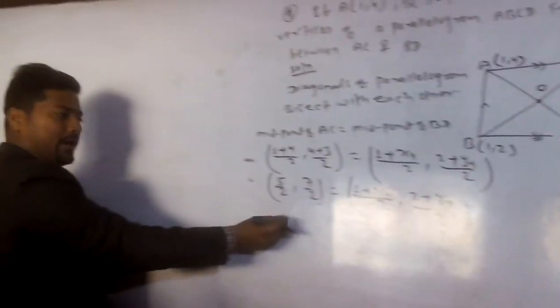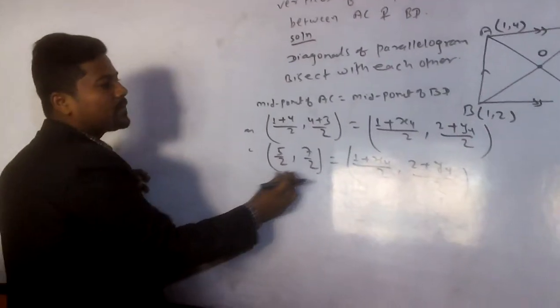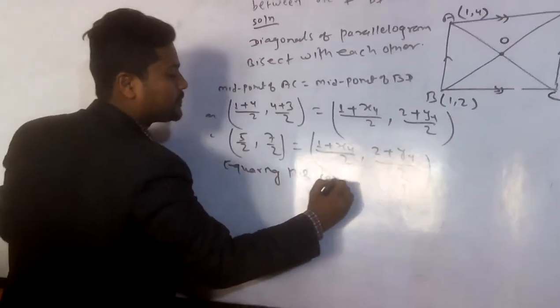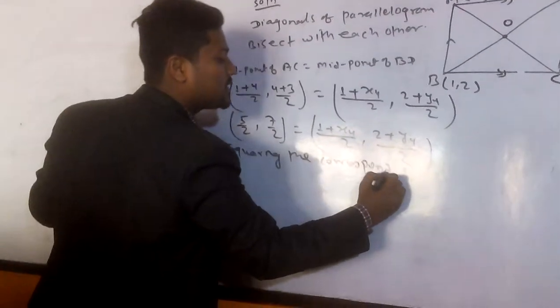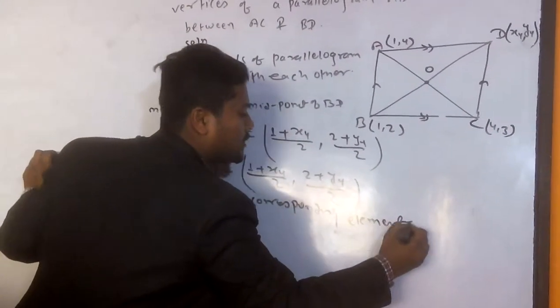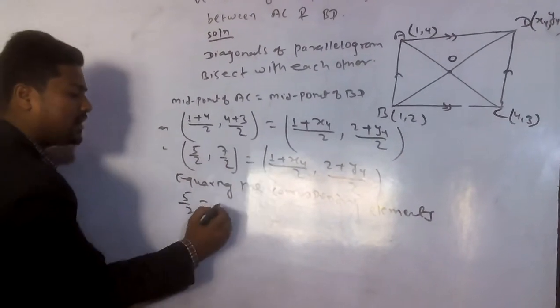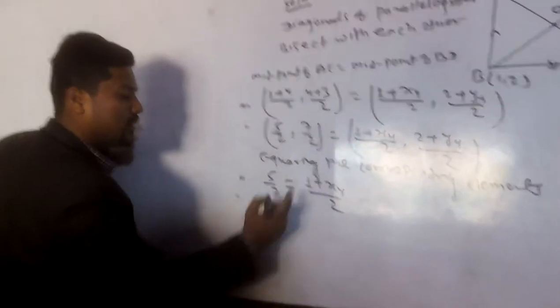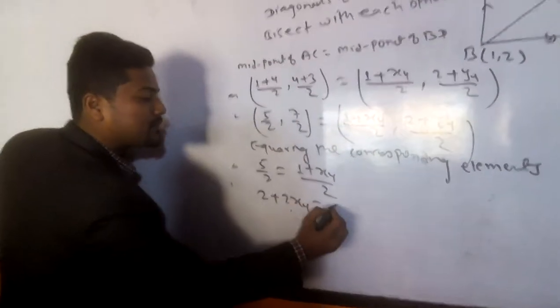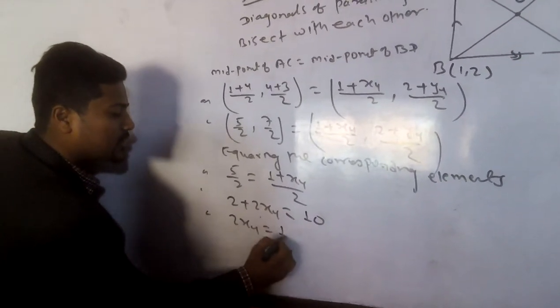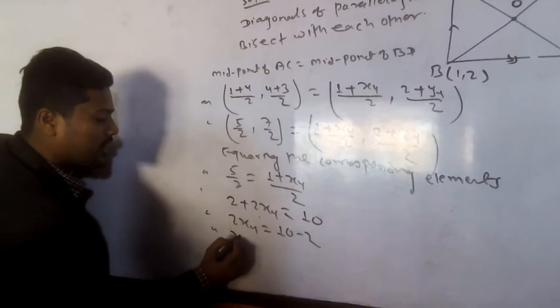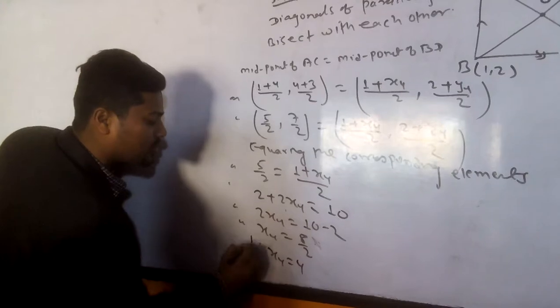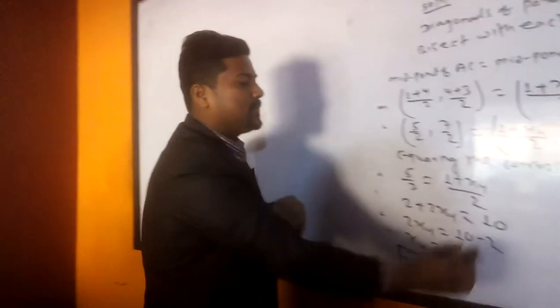So in this way, what we can do now? Equating the corresponding elements. Equating the corresponding elements. Corresponding elements we have to equate. So 5 by 2 is equals to 1 plus X4 by 2. Cross multiplication. Now 2 on the 2 plus 2 power X4. 5 times 2 is 10. So 10 minus 2. 10 minus 2, X4 is equals to 8 divided by 2. So therefore X4 is 4. Got it?